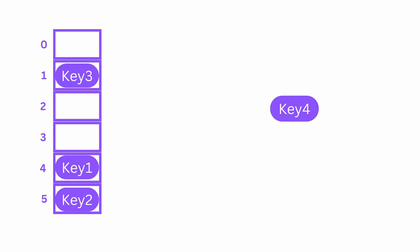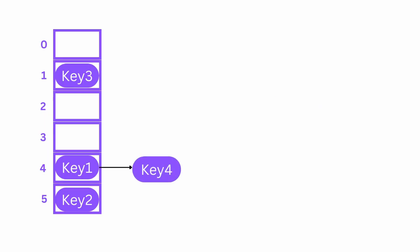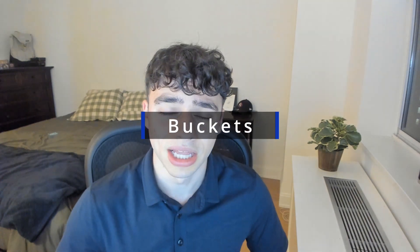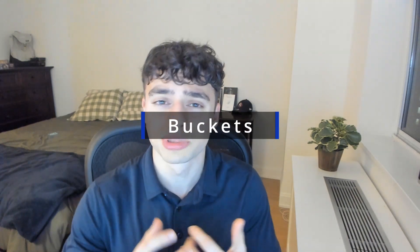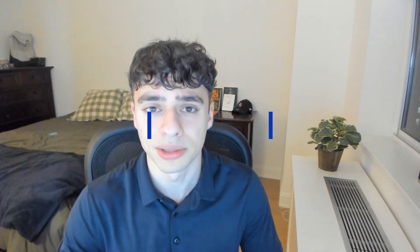The other option is called separate chaining. With this technique, we can connect colliding nodes into some chained data structure, like for example a linked list or some binary search tree. Just so you know, you'll often hear the term buckets, and that just means groups of nodes that all had the same hash index.